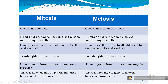Now, here are the major differences between mitosis and meiosis. Mitosis occurs in body cells, whereas meiosis occurs in reproductive cells. In mitosis, daughter cells are identical to parent cells and each other. But in meiosis, they are genetically different because of crossing over. In mitosis, two daughter cells are formed, but in meiosis, four daughter cells are formed.